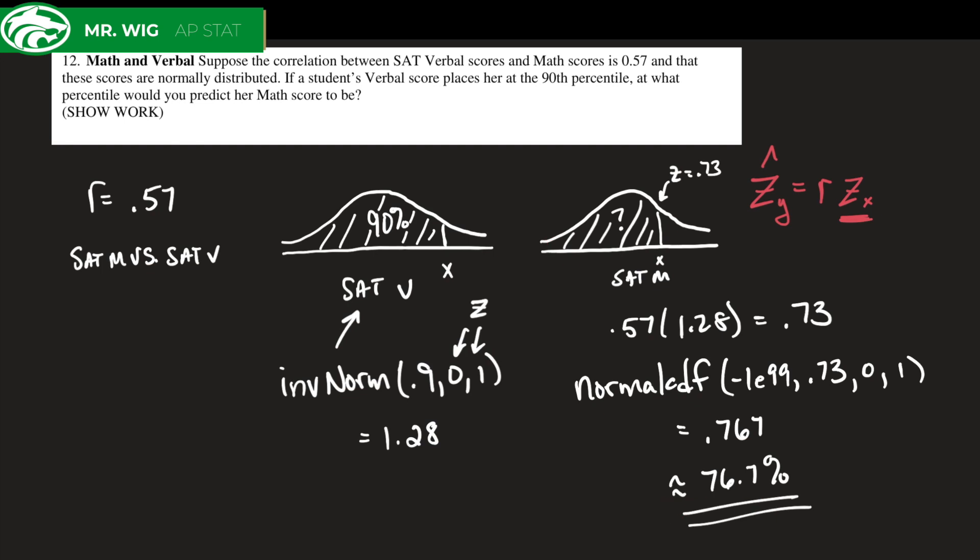The next part would be to find the area below the curve because that is definitively what percentile is, the area to the left. Turns out that there's 76.7 percent of the area to the left of this particular value, so her math SAT score would have been approximately in the 76th percentile. Hope that helps. If you got any questions, bring them to class.